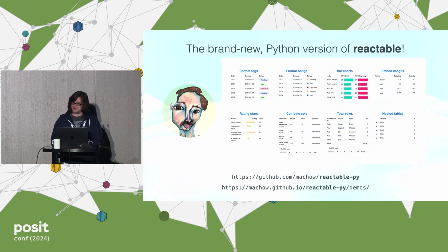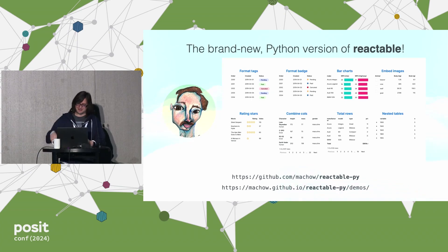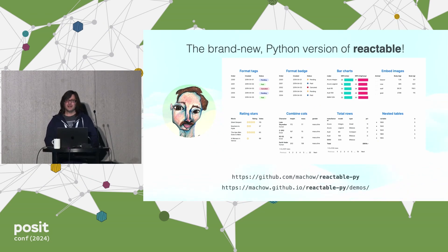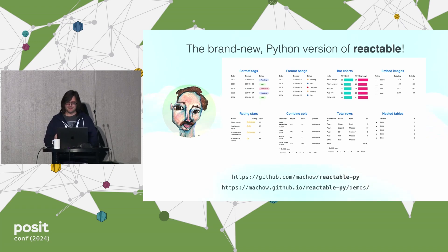There's also a brand new Python version of Reactable, care of Mike Chow, who is probably in the room somewhere. It just got released like two days ago. The best way to search it up is just Reactable-py. If you know Reactable, it's like the same thing but in Python. And that's amazing because Reactable is amazing.